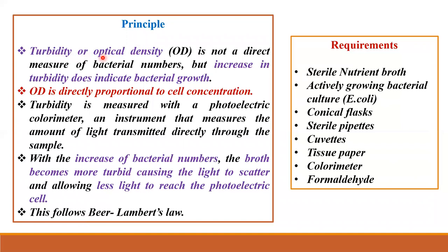Principle: turbidity or optical density is not a direct measure of bacterial numbers, but an increase in turbidity does indicate bacterial growth. Optical density is directly proportional to cell concentration. Turbidity is measured with a photoelectric colorimeter — an instrument that measures the amount of light transmitted directly through the sample. With the increase of bacterial numbers the broth becomes more turbid, causing the light to scatter and allowing less light to reach the photoelectric cell. This follows Beer-Lambert's law.